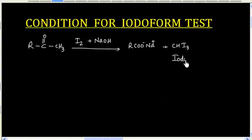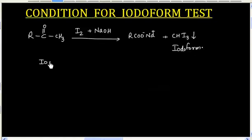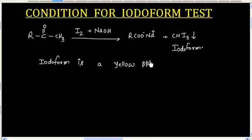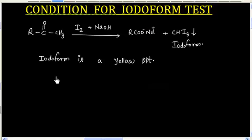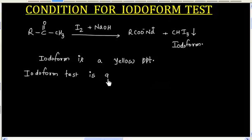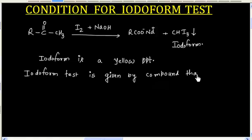CHI3 is called Iodoform. Iodoform is a yellow precipitate. This reaction is used for a test of the methyl ketone group, so we can say the Iodoform test is given by a compound that has a methyl ketone group present.